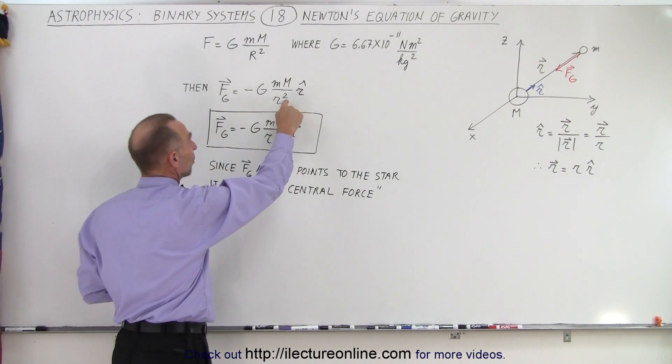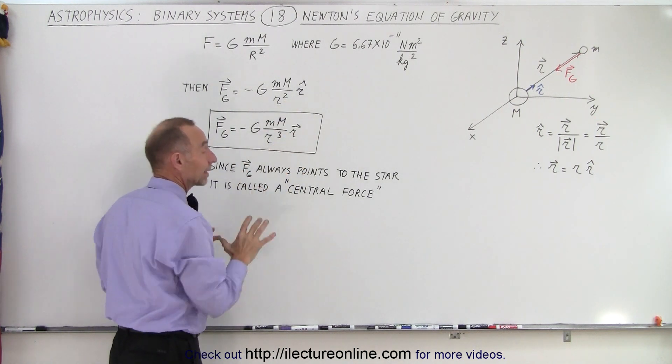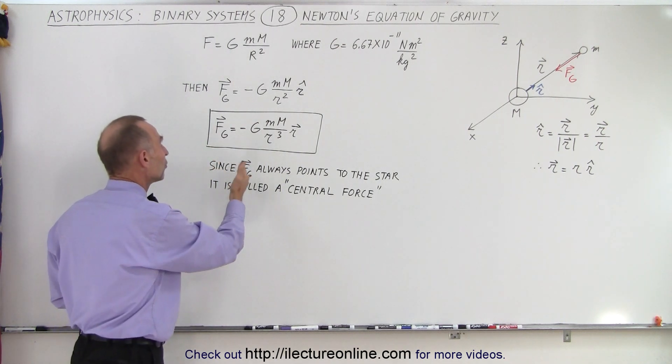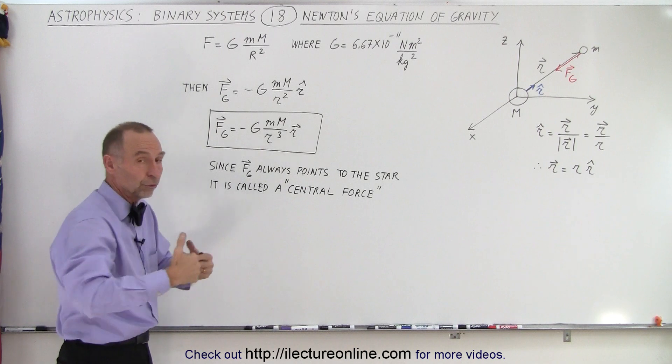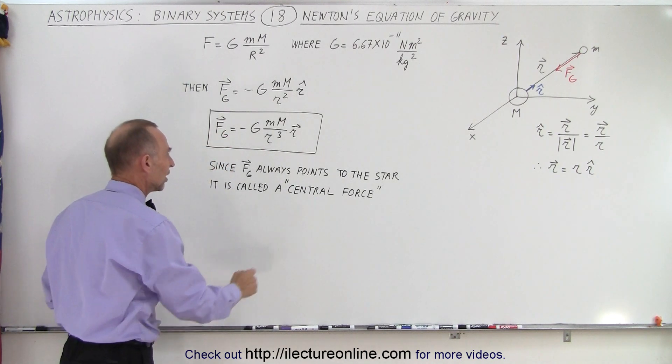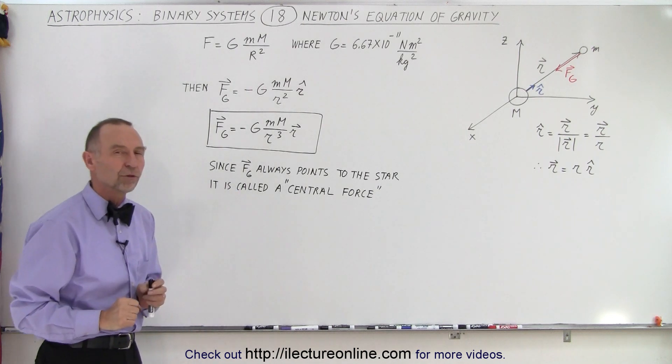The unit vector is used, you write it like this. With the position vector, you write it like that, just to clarify things. And finally, we know that it's always going to point towards the star, or in this case in our solar system, towards the sun, and therefore this force, the gravitational force, is called a central force.